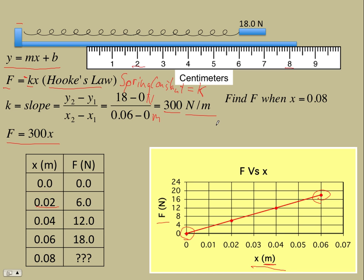I have the data table filled in at 0.08. What are we going to put here for the force? Well we first make sure we put x in terms of meters, and then we can use our equation and put in 0.08 for x. We get 24 newtons.